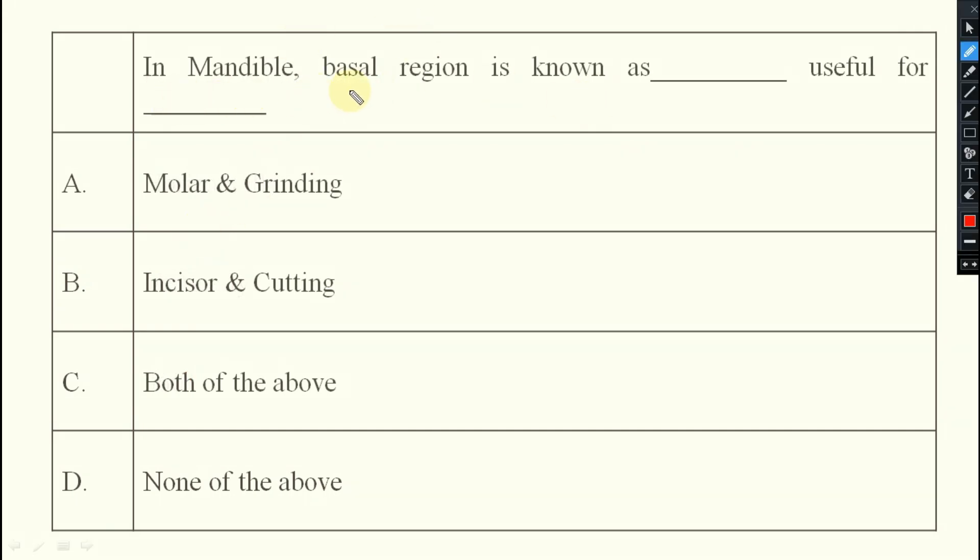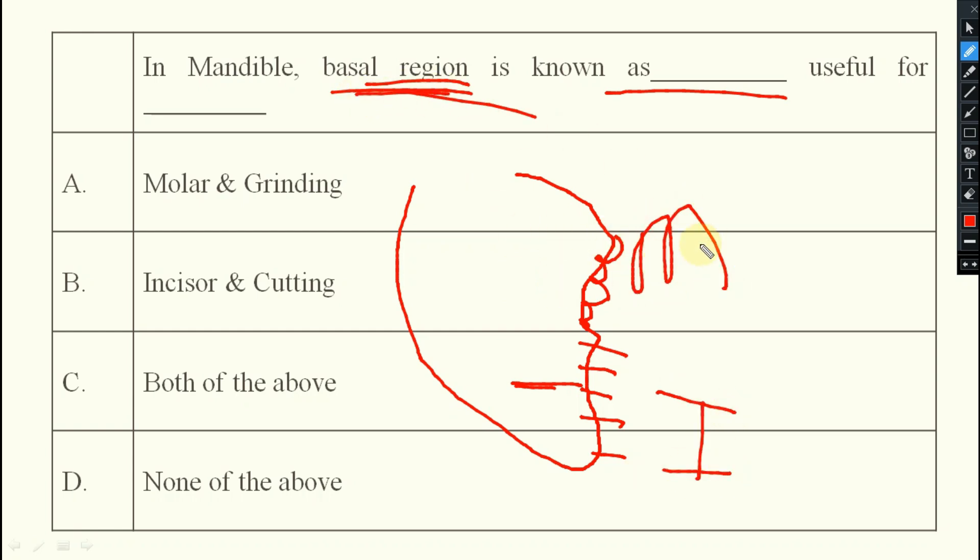Next. In mandible, basal region is known as what and useful for what? You see, in case of mandible, such kind of things will be there. Here different cutting like edge will be there. Here grinding like edge will be there. So this region is known as your incisor region. This region is known as molar region. So the basal region is your molar region. This is for molar and grinding. It will be useful for grinding.